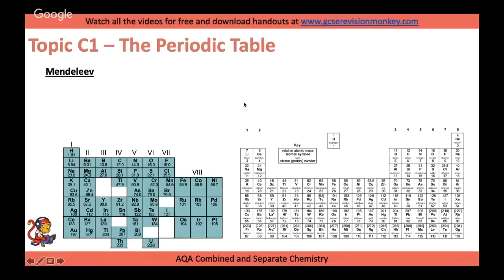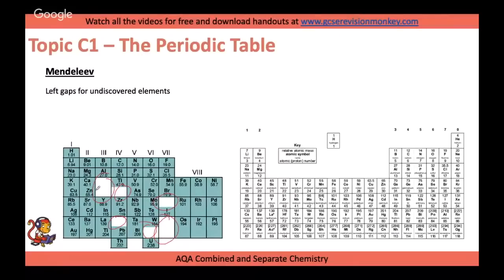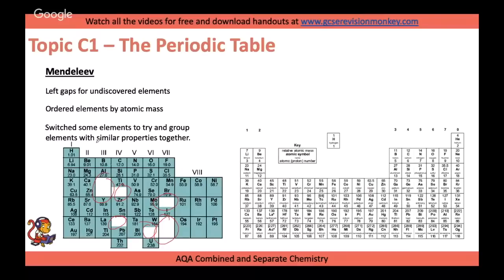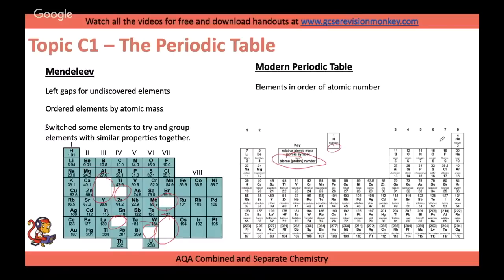Mendeleev's periodic table had gaps left for undiscovered elements — he didn't force elements into places. He even predicted properties like melting and boiling points for missing elements. He ordered them by atomic mass but moved some if their properties fitted better. The modern periodic table orders elements by atomic number (the bottom number), going 1, 2, 3, 4 in order. Elements with similar properties are grouped together in the same group.